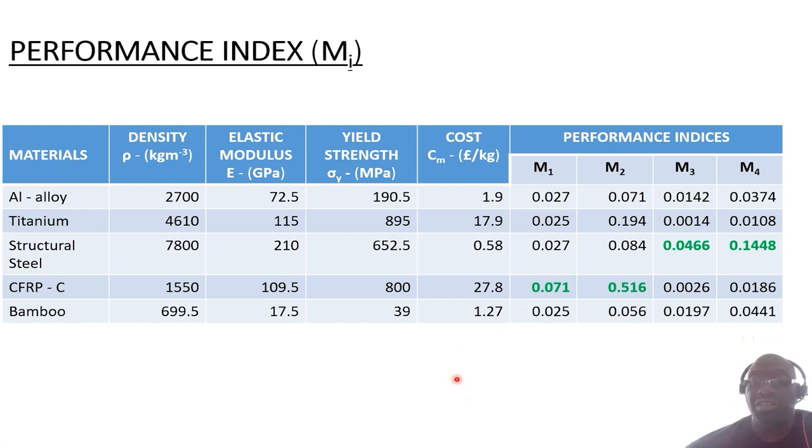The first performance index M1 looks at the stiffness parameter, so stiffness to density. When we put in the density and the Young's modulus, these are the numerical data that we get. Since we're looking at maximizing to enable us to select the best material that gives excellent stiffness with respect to reduced mass, it indicates here that carbon reinforced composite is the best one to consider since it has the highest value. We can also look at metric M2, which looks at the strength to mass performance index using sigma Y over rho. Again, the values indicate that carbon fiber is the best material. But what happens when we introduce the cost element?